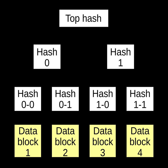Hash trees are a generalization of hash lists and hash chains. To demonstrate that a leaf node is part of a given hash tree requires an amount of data proportional to the log of the number of nodes of the tree. This contrasts with hash lists where the amount is proportional to the number of nodes. The concept is named after Ralph Merkle.